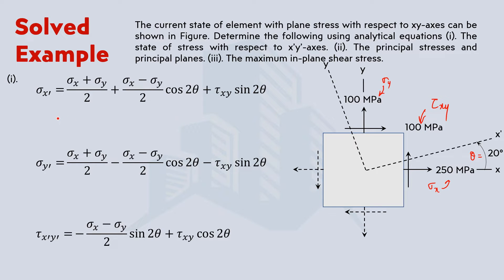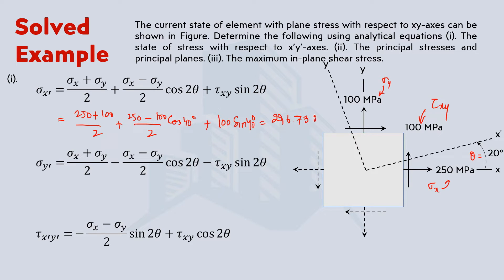Putting in all the given values: sigma x is 250, sigma y is 100, theta is 20 degrees so that becomes 40 in the formula, and tau xy is 100 sine 40. Doing the calculations, we get sigma x' as 296.73 MPa. Using the same sigma x, sigma y, tau xy, and theta, we get sigma y' as 53.27 MPa. For the shear stress at x'-y', the calculation gives 28.395 MPa.